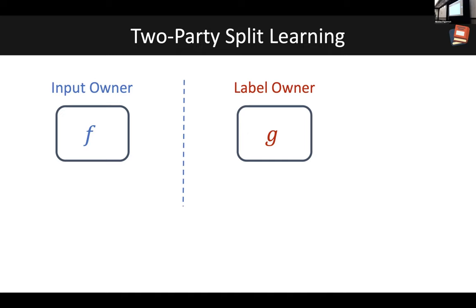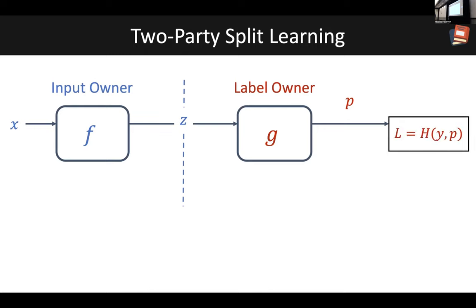Let me walk you through the training process involved in training the split model. During the forward pass, the input owner takes the input X, passes it through model F, and produces the embedding Z. This embedding is shared to the label owner. The label owner continues forward propagation through model G and produces prediction P. Along with the label corresponding to the input, this can then be used to compute the loss.